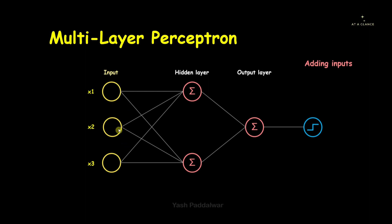We can also add inputs to this multi-layer perceptron. Here I've added one input x3 — you can add as many input features as you have in the dataset. When you add input neurons, they get connected to all neurons present in the hidden layer. We'll look at how things are affected when we add more input features in the upcoming videos.